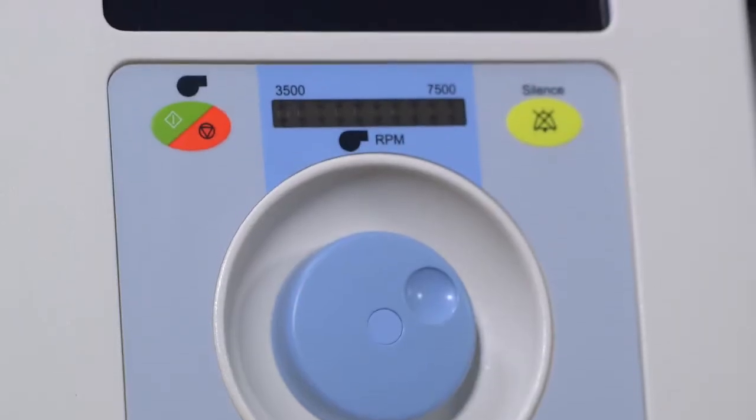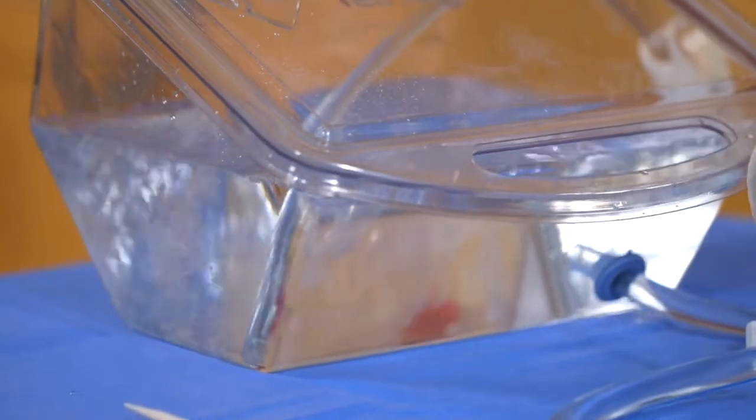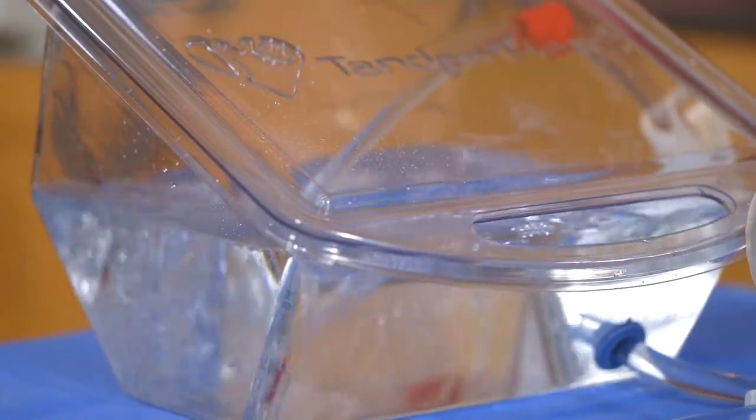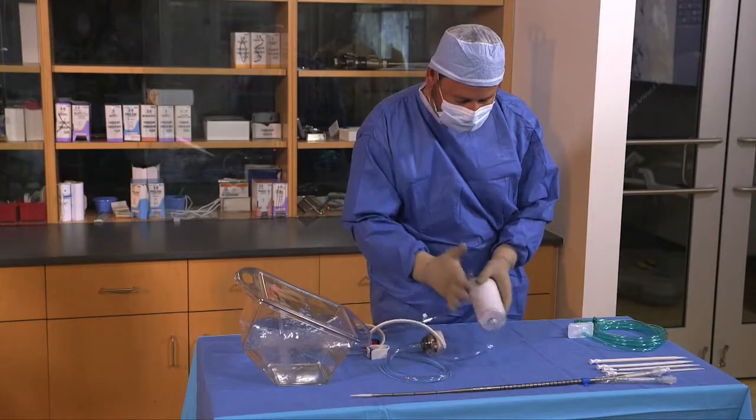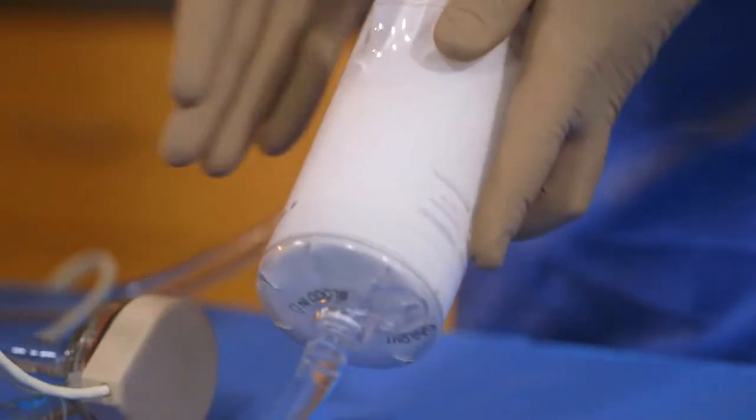The controller operator starts the pump while the sterile operator positions the oxygenator with the outflow port pointing upward and taps the oxygenator to facilitate air removal during the priming process.